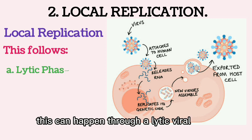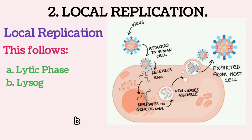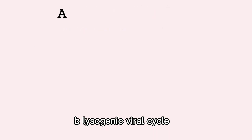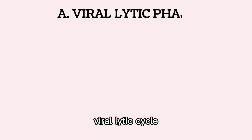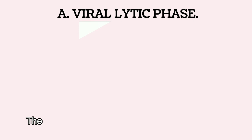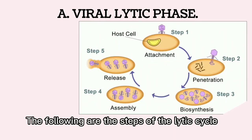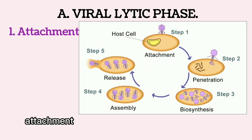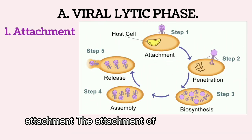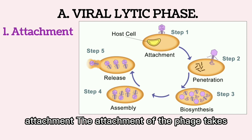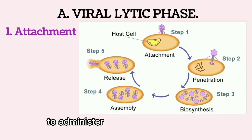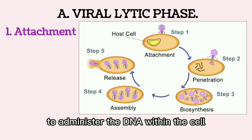This can happen through the lytic viral cycle or the lysogenic viral cycle. In the viral lytic cycle, the following are the steps: Step 1 - Attachment. The attachment of the phage takes place to the host cell surface to administer the DNA within the cell.